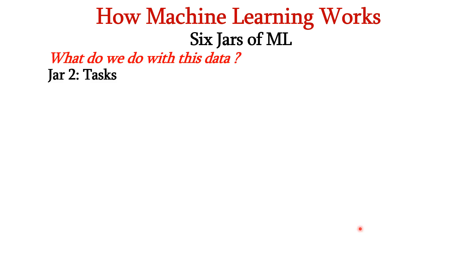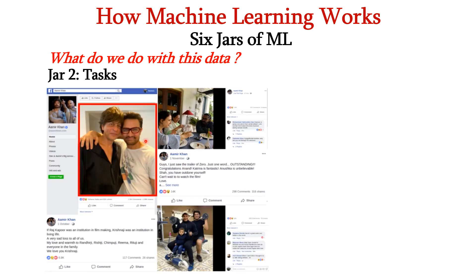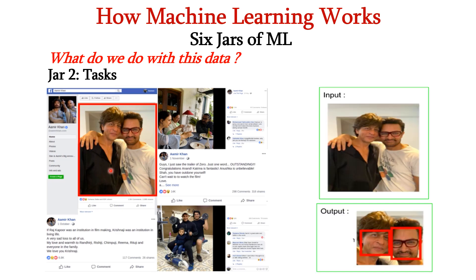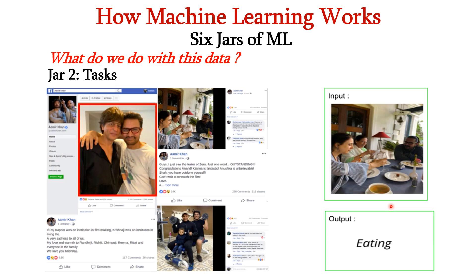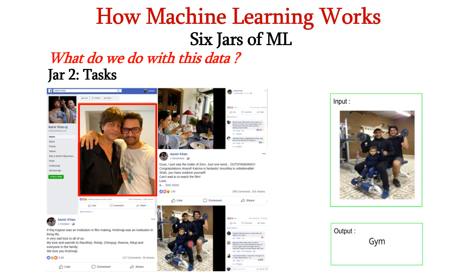Now, we have the data. What do we do with this data? Here comes the role of jar 2, that is task. We have to identify the task to be done on the data. Consider this Facebook image where we have 3 images. If we consider this image, we can do face tagging. If we consider this image, we can identify the action performed. And if we consider this image, we can identify the location. These are the tasks identified on this particular data available.